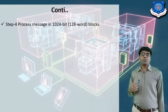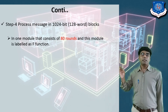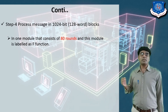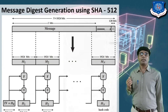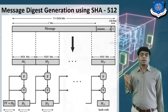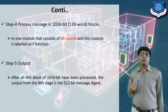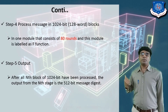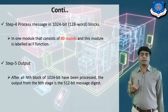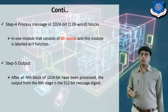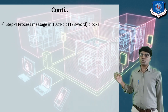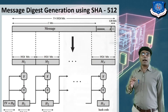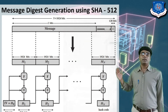Step 4: process the message in 1024-bit blocks. Each module consists of 80 rounds, labeled as the F function, as you can see in the figure. Step 5: after all N blocks of 1024 bits have been processed, the output from the Nth stage is a 512-bit message digest, also called the hash code or hash value. The total input is N × 1024 bits, and after applying the function it generates the hash value.